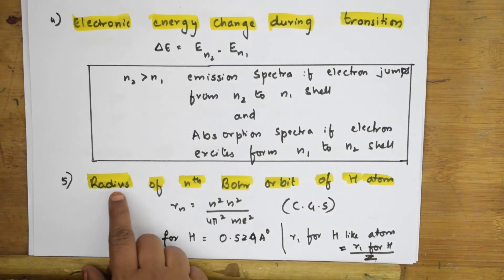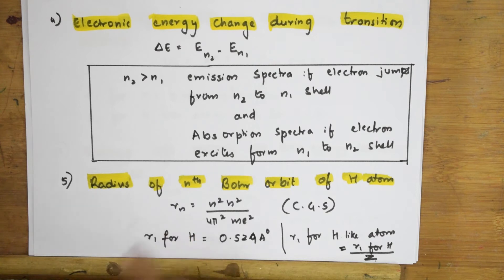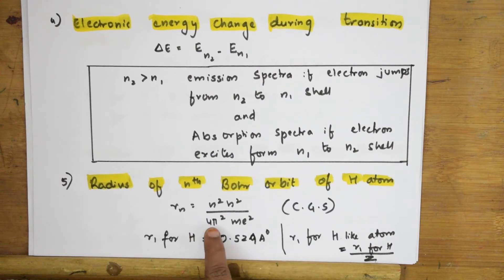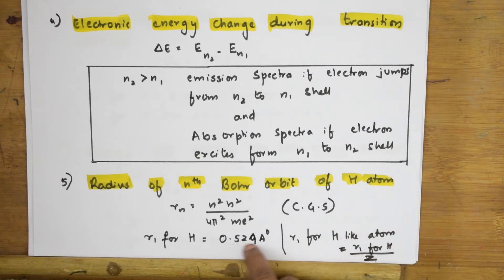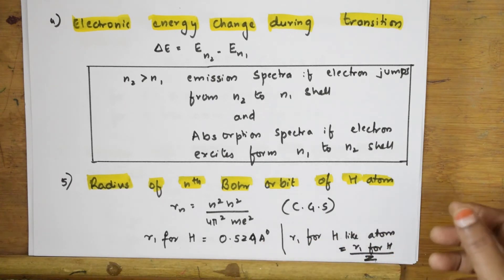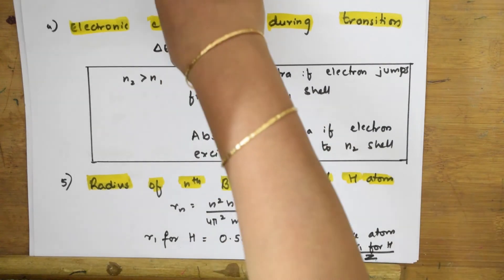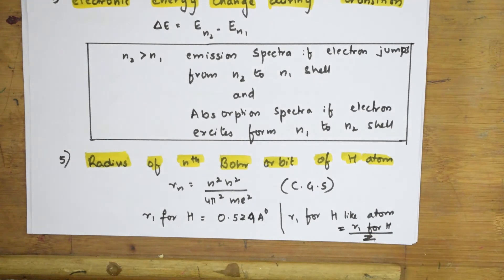To find the radius of the nth Bohr orbit, there is a direct formula: r_n = n²h² / (4π²me²). For CBSE Grade 11, the formula is given directly. The value of r₁ for hydrogen is 0.529 angstroms — the radius of the hydrogen atom. If the question asks for the radius of a hydrogen-like atom, the formula becomes r₁ × (n² / Z), where Z is the atomic number, so be careful whether they've asked for a hydrogen atom or a hydrogen-like atom.